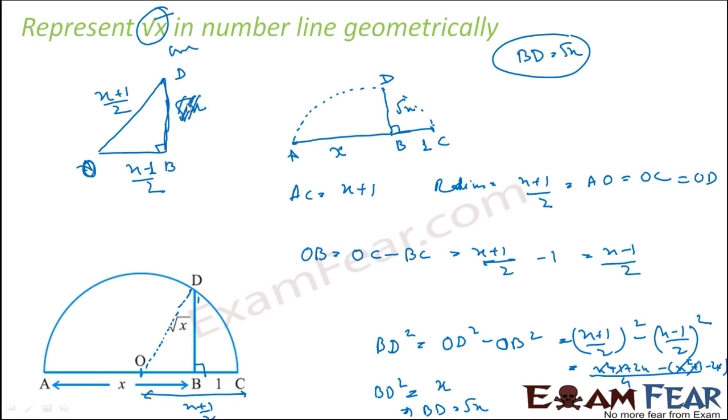Pretty easy. Even if you want to, let's assume you don't know the length of this, this is x minus 1 by 2, this length is x plus 1 by 2. Using Pythagoras theorem, you can find this value as root x.